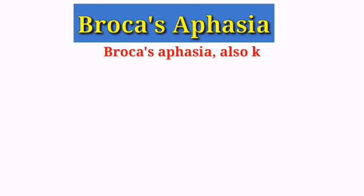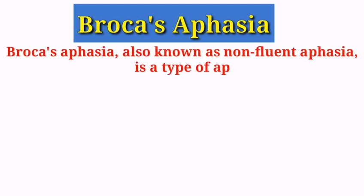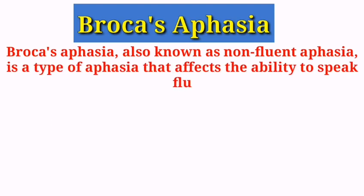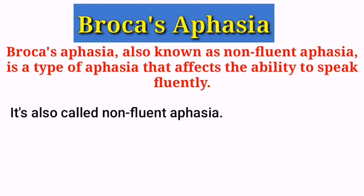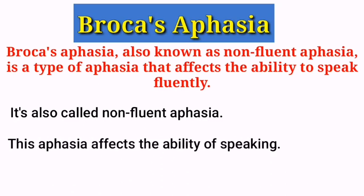Let's first learn Broca's aphasia. Broca's aphasia, also known as non-fluent aphasia, is a type of aphasia that affects the ability to speak fluently. If you have Broca's aphasia, you may be able to comprehend what's being said but be unable to speak fluently because your brain isn't able to control the fluency of your speech. This is called Broca's aphasia.